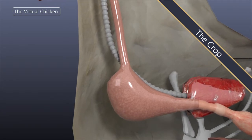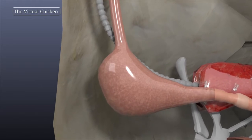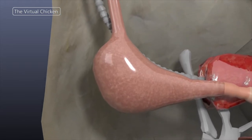In the chicken digestive system, the crop is an extension of the esophagus. It's a thin-walled pouch at the base of the thoracic section of the esophagus.